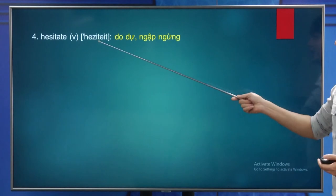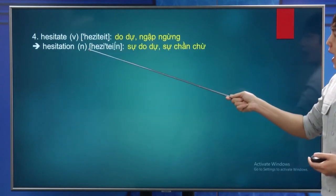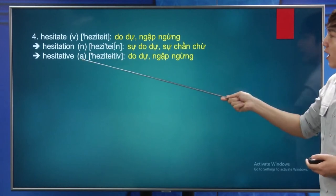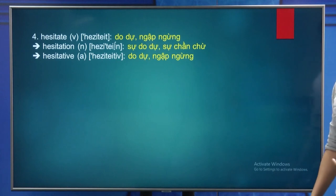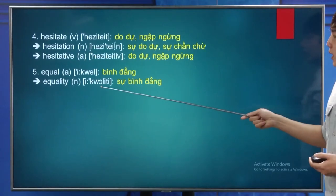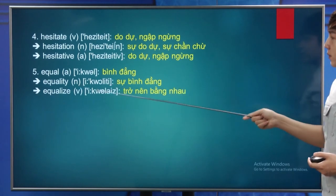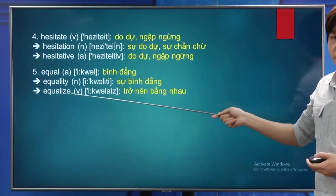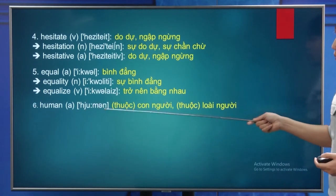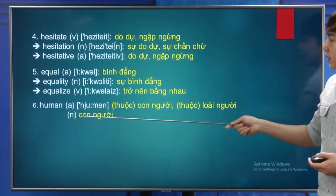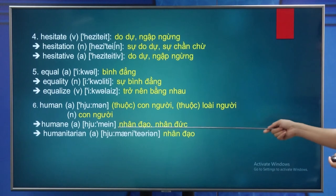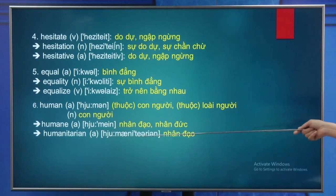Number 6 - Human: the adjective is human, and it is also a noun meaning 'con người'. From here we have two adjectives: human and humanitarian. Chúng ta sẽ đến với phần nội dung tiếp theo là practice. Trong nội dung phần này thì chúng ta sẽ có 4 câu hỏi: 2 câu về từ vựng và 2 câu về hình thức từ.